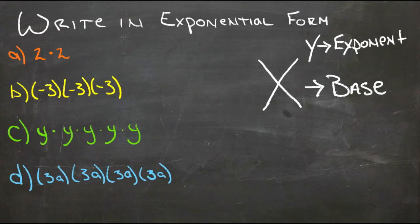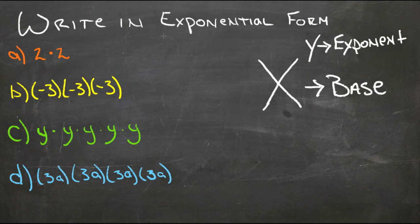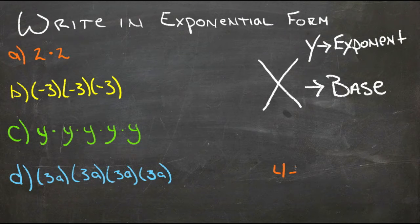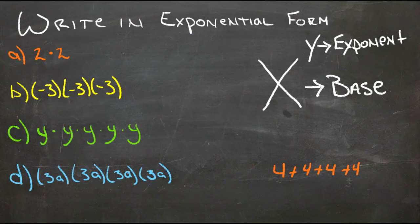Exponential form is just a shortcut for repeated multiplication, in the same way that multiplication is a shortcut for repeated addition. If we always had to write something like 4 plus 4 plus 4 plus 4 instead of just writing 4 times 4, it would take a lot longer to do the problems that you do every day.